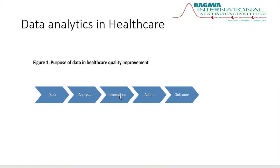If you get positive information, as a healthcare quality professional you just keep monitoring. But if you get any abnormal or negative findings, prepare an action plan to resolve the problem. Then implement it. If implemented successfully, we can achieve the optimal outcome.